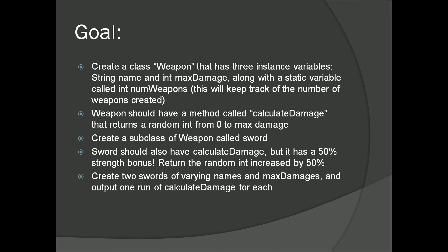Now create two swords of varying names and max damages, and output one run of calculateDamage for each — just run that new improved calculateDamage method for the swords. Also, one last thing: output the total number of weapons created.